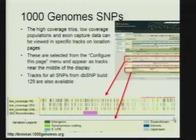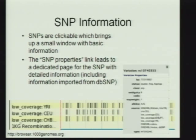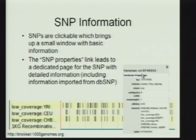The green SNPs here, which you can see right in this area, are synonymous coding SNPs — this is actually in a coding exon where those SNPs are located. All of the SNPs themselves are clickable and bring up additional information when you click on one of them. This is an example of the box that pops up — it tells you the location, provides additional information about where it was seen, for example in the low-coverage pilots. A link will take you to a main SNP page that contains information about the SNP properties; much of this information has been extracted from dbSNP.